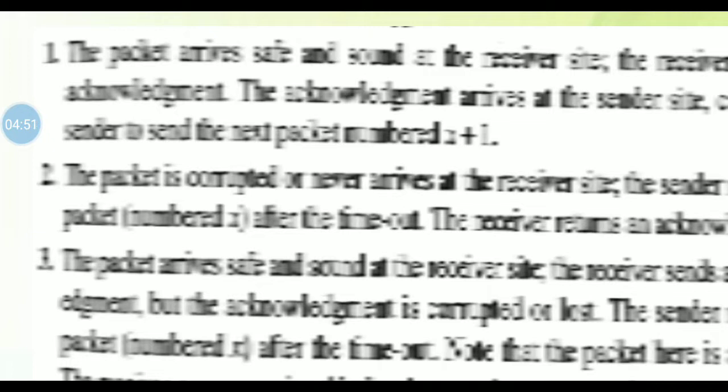Third, the packet arrives at the receiver side but the acknowledgement is corrupted or lost. The sender then resends the packet numbered x after the timeout. Note that this packet is a duplicate — the receiver can recognize this because it expects packet x+1 but packet x was received.